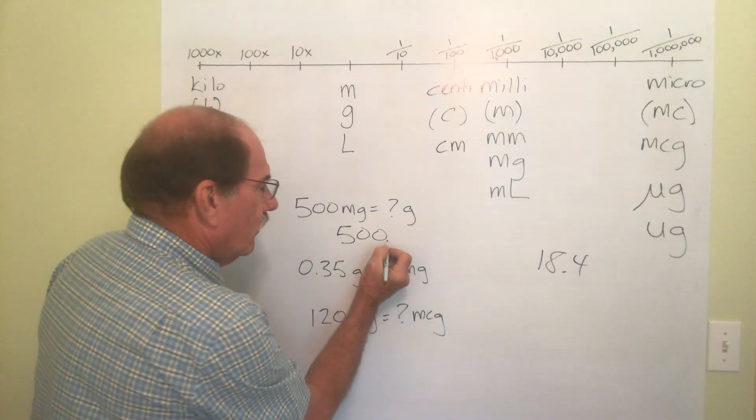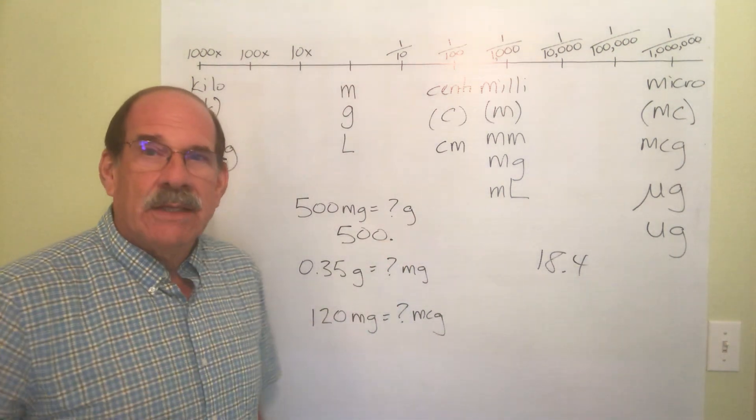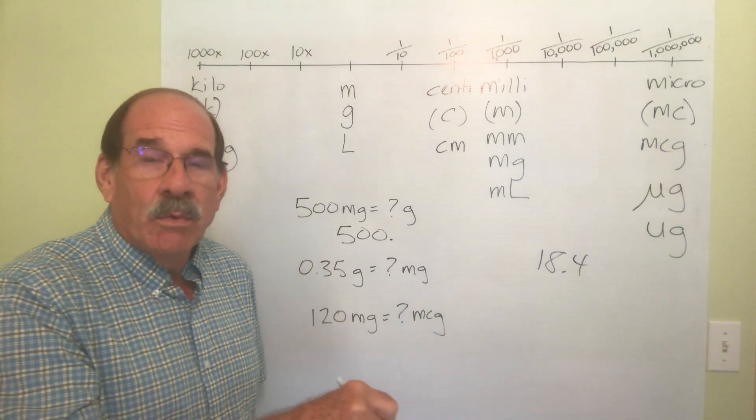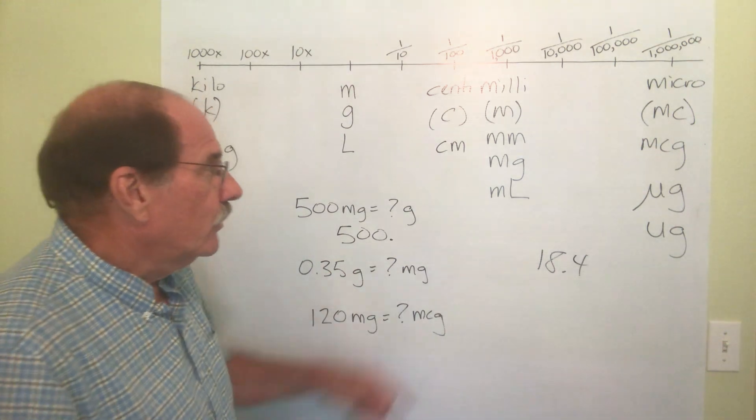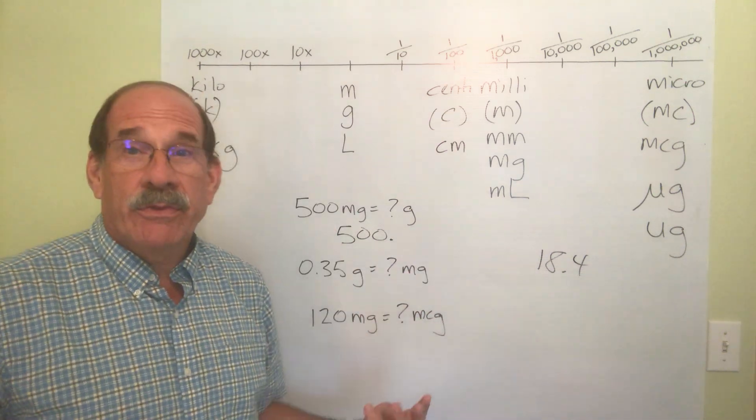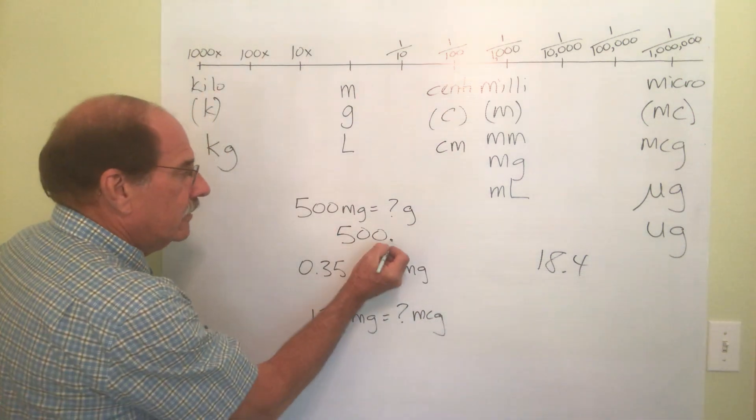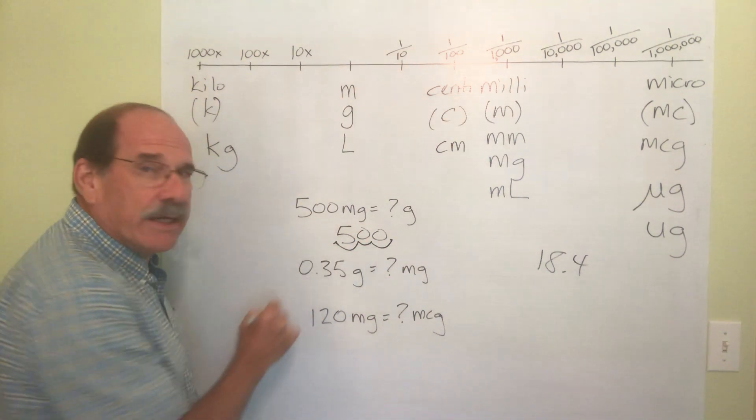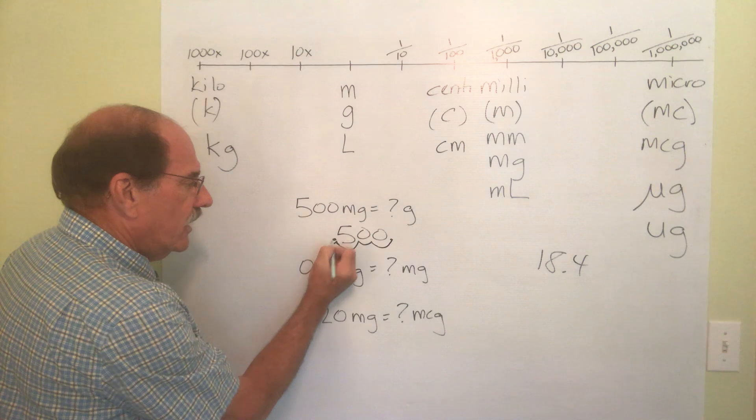So 500, although you don't write the decimal if there's nothing else past it, but temporarily we must put that decimal right there. That's where the decimal's starting. Where's the decimal going? We're going left three places. I move that dot one to the left, two, three. It ends up right there.